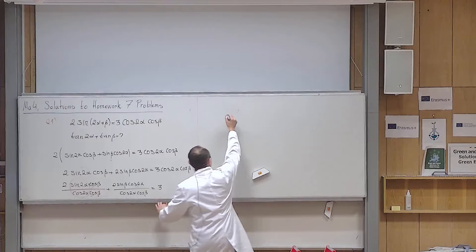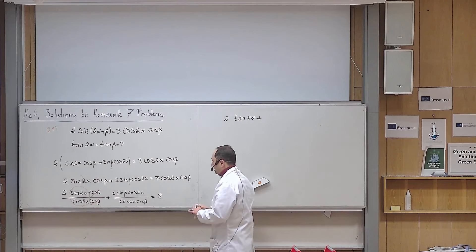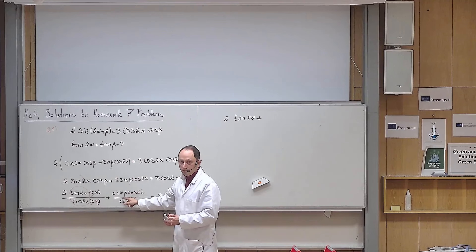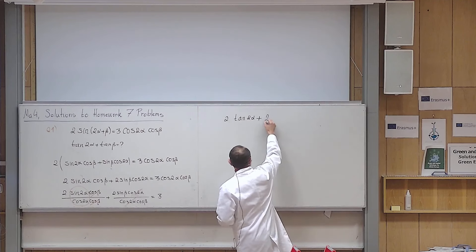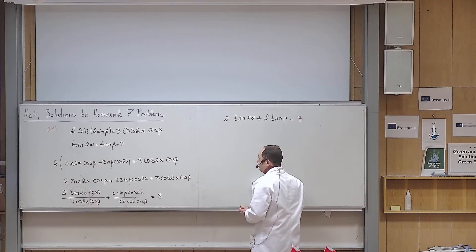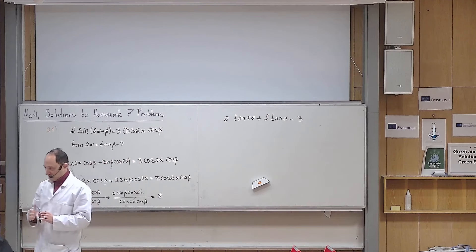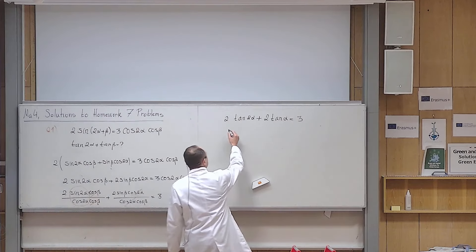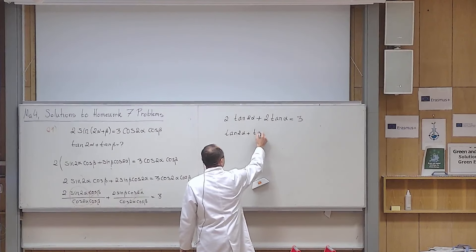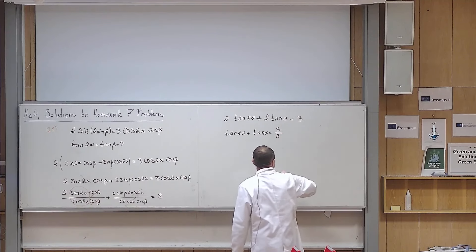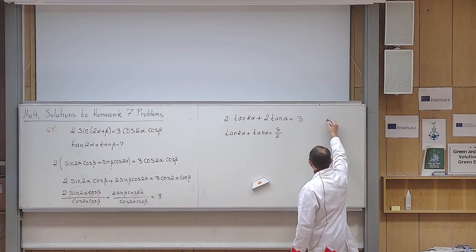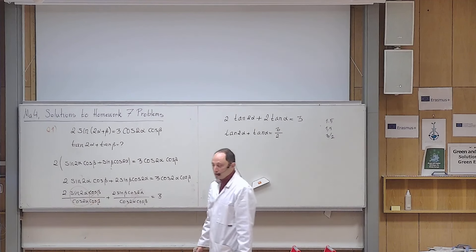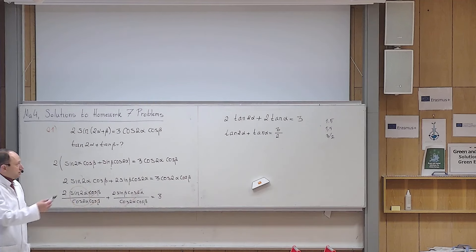So it becomes 2 tan(2α) + 2 tan(β) = 3. My question asks for tan(2α) + tan(β), so I divide by 2 and get tan(2α) + tan(β) = 3/2. If you want, 1.5 is also correct, or 1 comma 5. You can use the slash key to write 3/2 as a fraction.